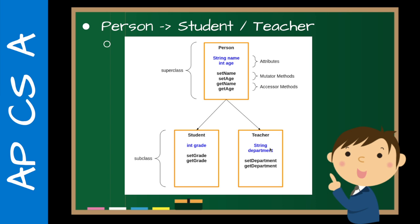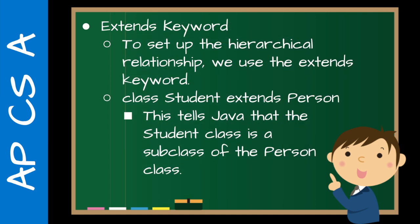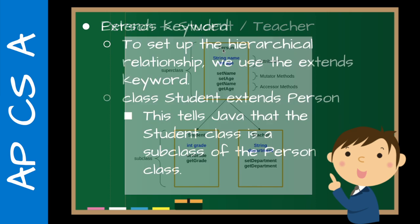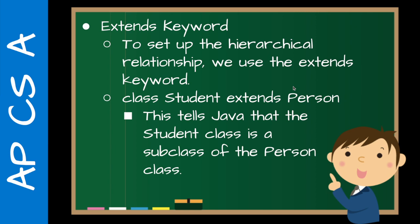It's a really powerful way of organizing, because if we want to add something to the superclass, it's automatically added to the subclasses, which is pretty cool. To set up this relationship in the code, we use the extends keyword. So for example, class Student extends Person tells Java that the Student class is a subclass of the Person class. And the same thing: class Teacher extends Person.